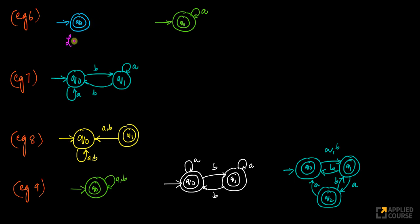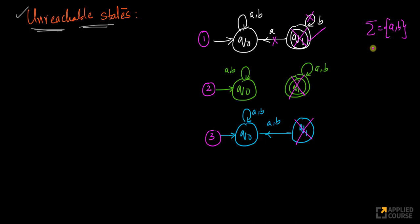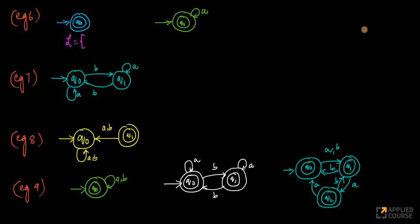What is the language accepted by this simple finite automaton? You start in q0, and there are no other transitions here. Assuming my input alphabet is a, b — I don't have any transition, so if I get a or b, I don't know what to transition to. I have only one state which is both my starting and final state. So if you have epsilon, the empty string, epsilon is accepted by this machine. You start in this state, and with epsilon you stay here, which is your final state. Hence, the language accepted by this machine is {epsilon}.